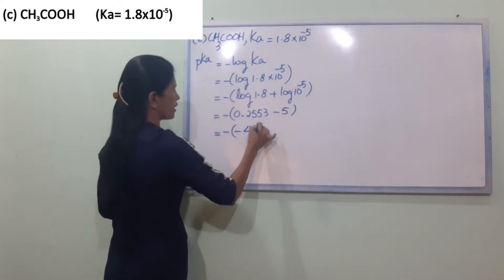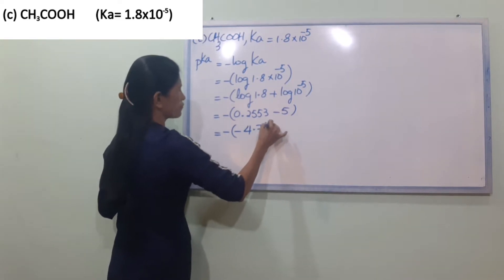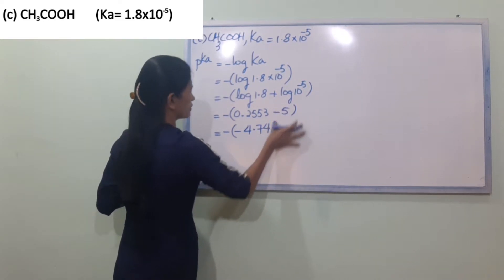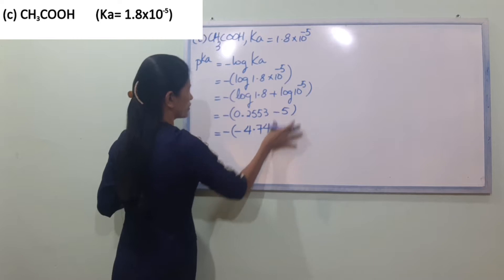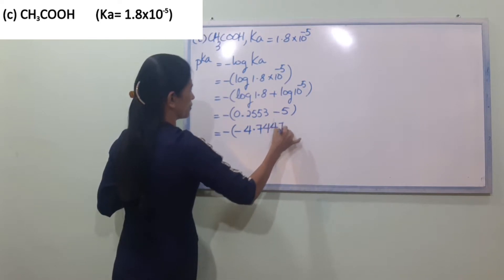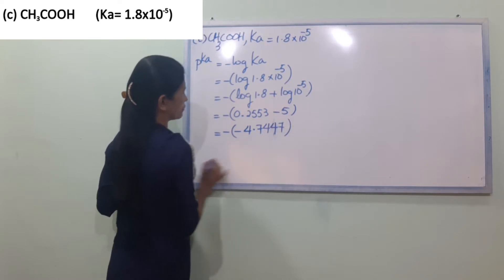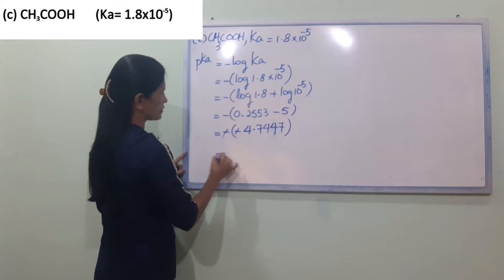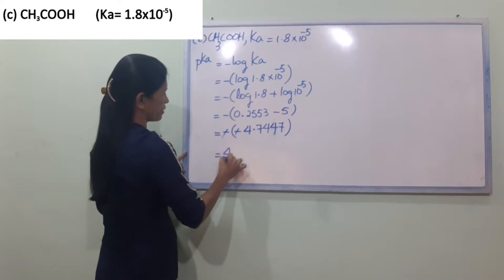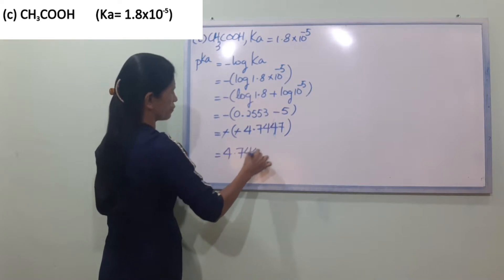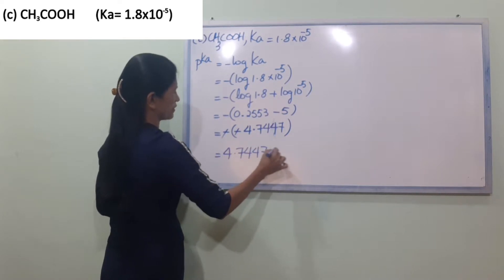So PKA is equal to 4.747, approximately 4.7447.